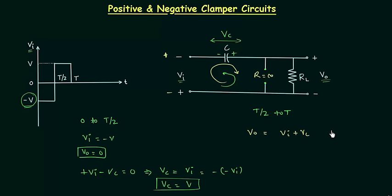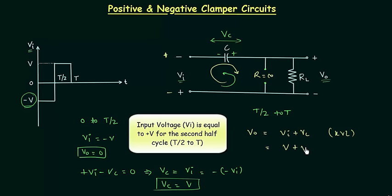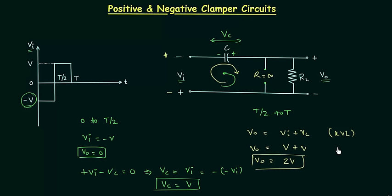After applying Kirchhoff's voltage law, Vi is equal to V and Vc is also equal to V. So the output voltage is simply equal to twice V, which is 2V. This is what we have after using Kirchhoff's voltage law for the second half cycle.